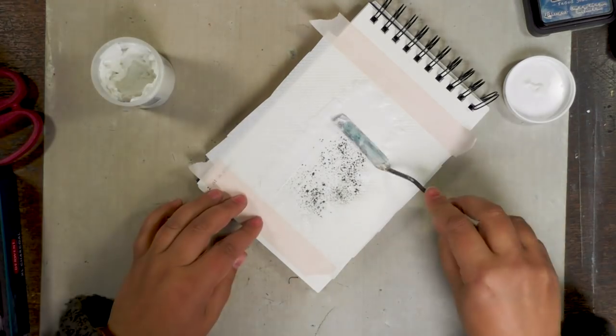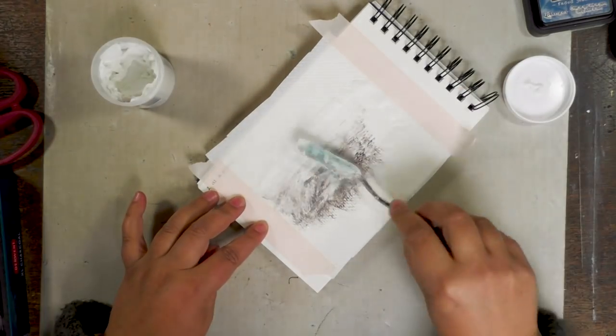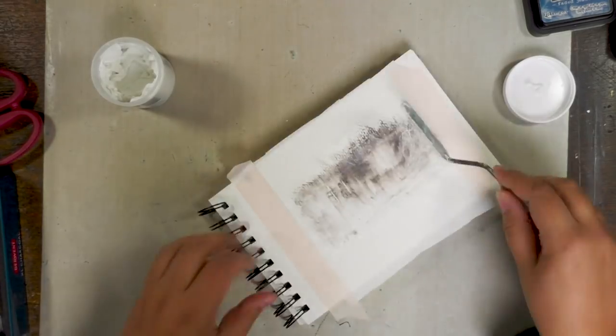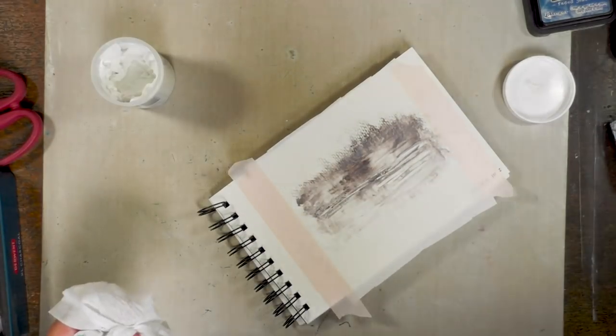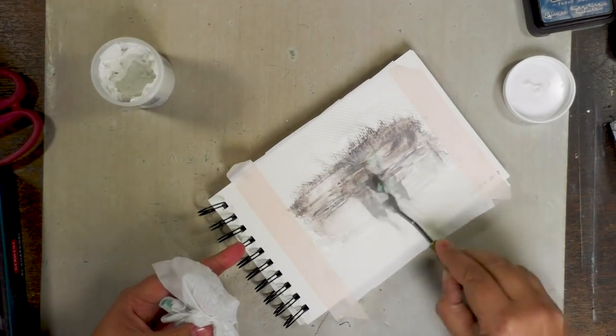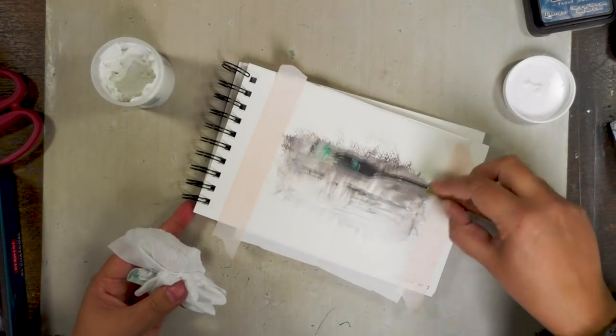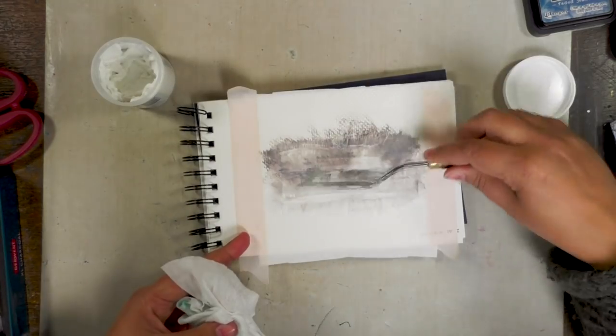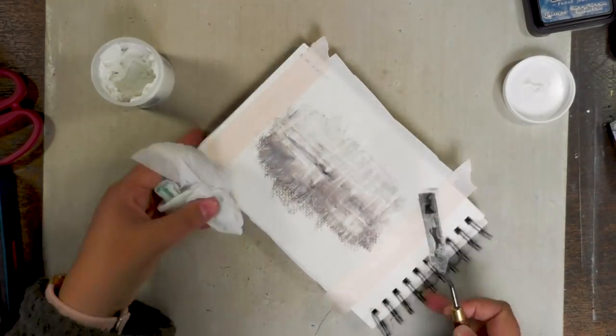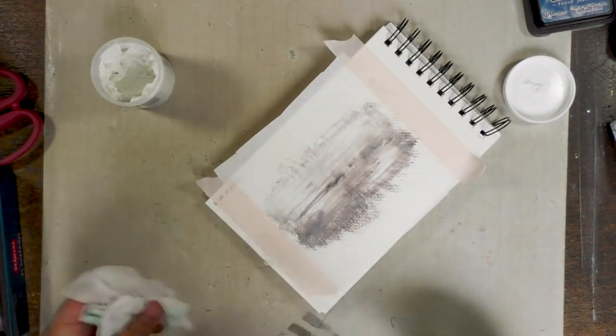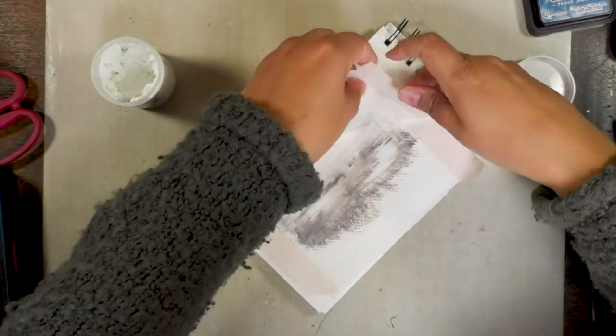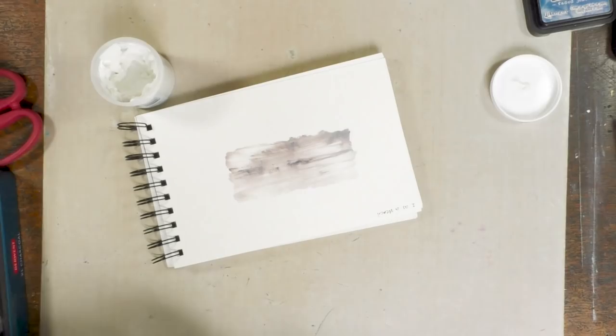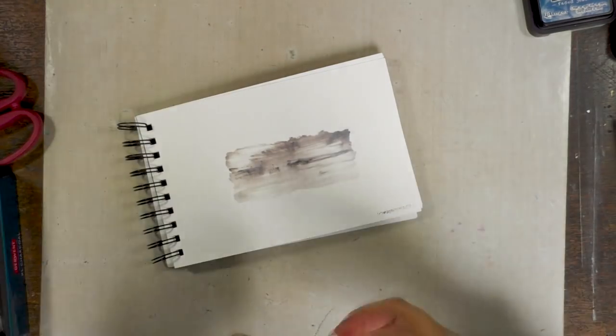So if I want to colorize my modeling paste I cannot use a spray ink because the piece of kitchen roll would just absorb it and then it will stain the paper. Instead I'm just scraping some charcoal I'm using here but I could be doing this with a pastel or with a neo color or just with a pencil. Just grate a pencil on top of your modeling paste and then push in the color or colorize your modeling paste before you apply it on the stencil.